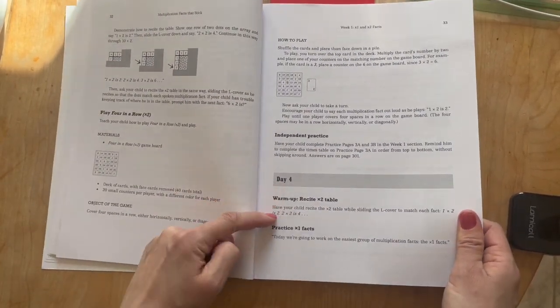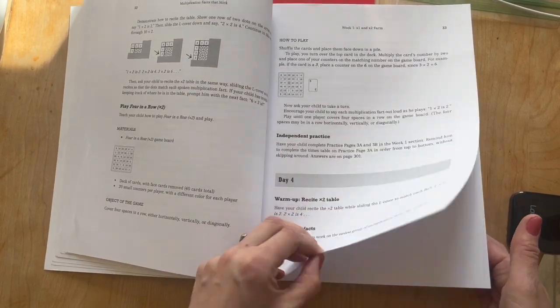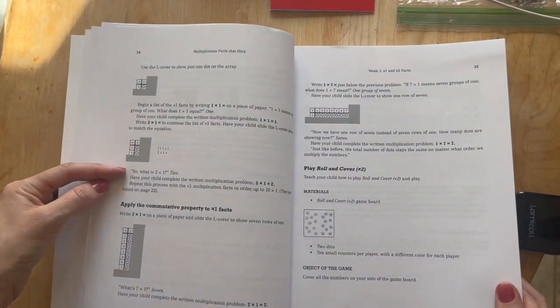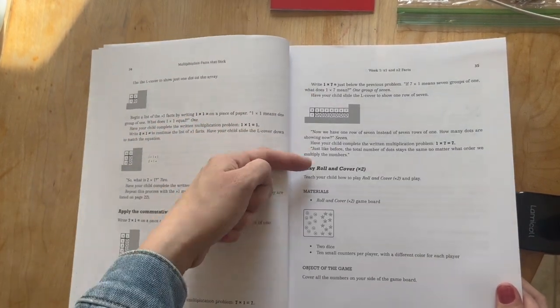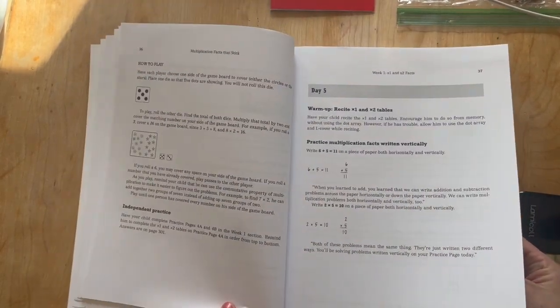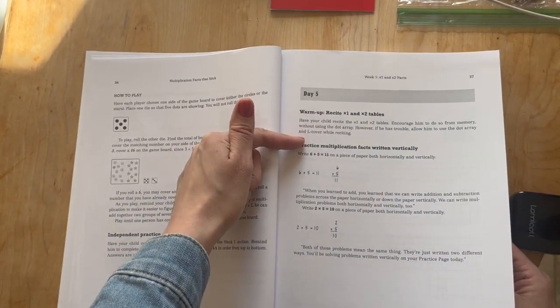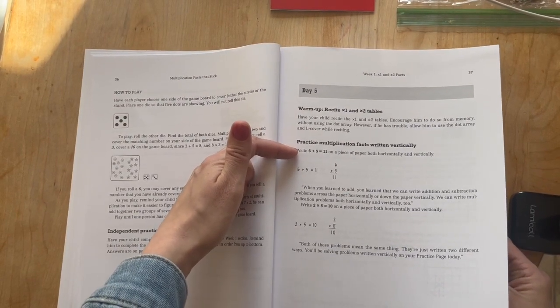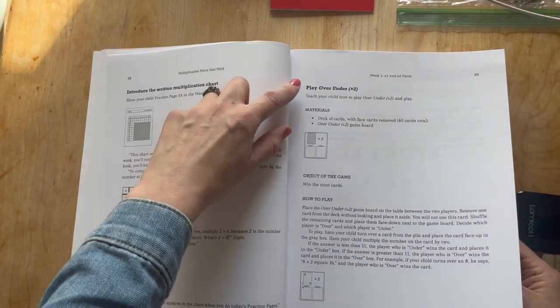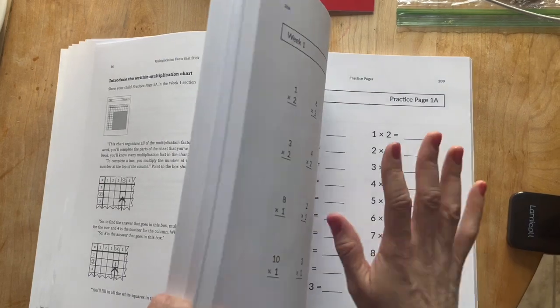So then day four, you have your warm-up. Recite the times two tables, one times two, two times two, three times two. Then you have your practicing your one times one facts. Obviously that's going to be super easy, but it won't be when you're in the larger numbers. Going down, say the script. And then you get to your new game, play roll and cover times two. So that's when we would come back and do the next game. Then after that game, independent practice. So they would do their worksheet. Day five, same thing, you're going to have warm-up, recite times one and times two tables. Then you'll have practice multiplication facts written vertically. You'll introduce the written multiplication chart and how that works. It explains that. Then you're going to play the board game play over and under for the times two. So this board game that day. And then they'll have their worksheet in the back.